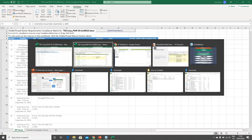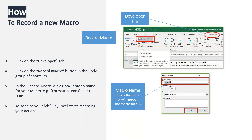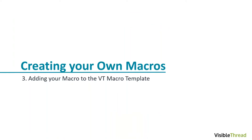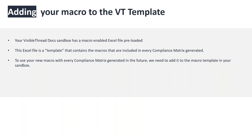Now we need to talk about how to add a macro to the VisibleThread sandbox template. We've created a macro for customizing our compliance matrix, stored locally on our machine. Now we need to get that macro into the template located in our VisibleThread Docs sandbox. To recap: the VisibleThread sandbox has a macro-enabled Excel file pre-loaded — a template containing macros that will be included in every compliance matrix generated.